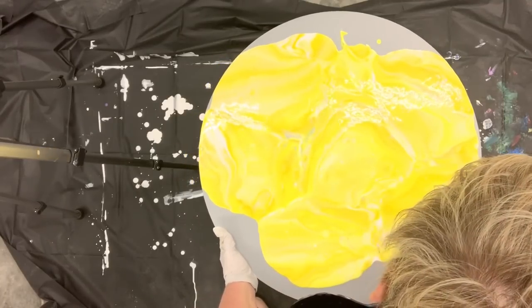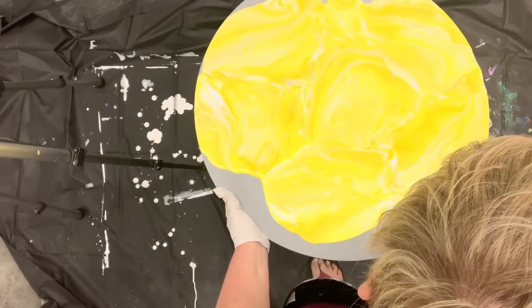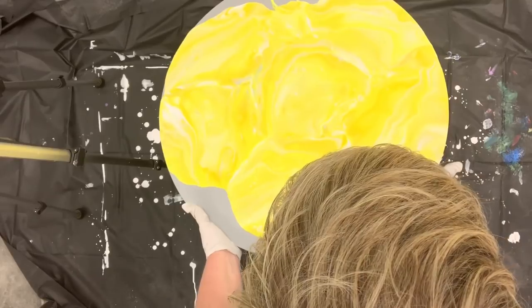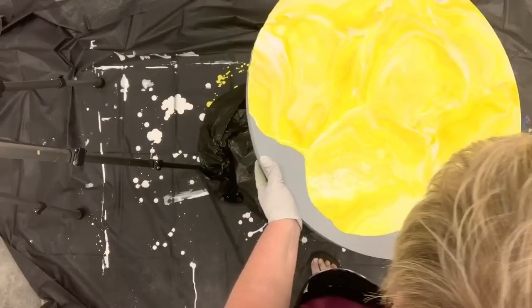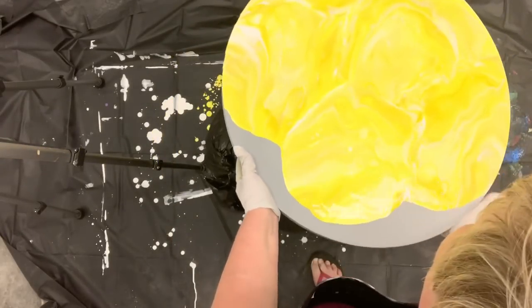I think what I want to do is kind of go in a circular motion if I can, just to kind of get my paint going in the right directions. Just kind of rocking it back and forth.